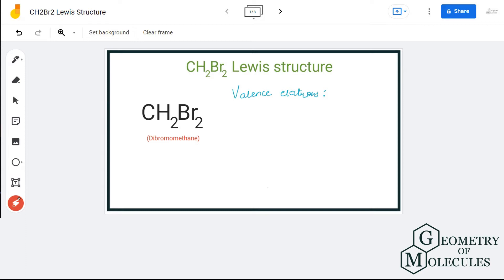Hi guys, welcome back to our channel. In today's video we are going to help you with CH2Br2 Lewis structure. It is a chemical formula for dibromomethane, and to determine its Lewis structure we will first look at the total number of valence electrons.